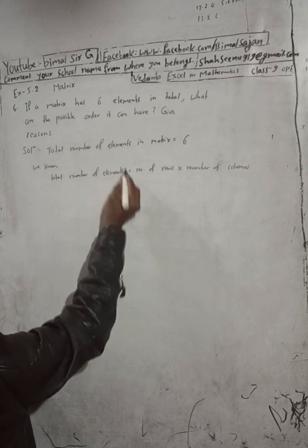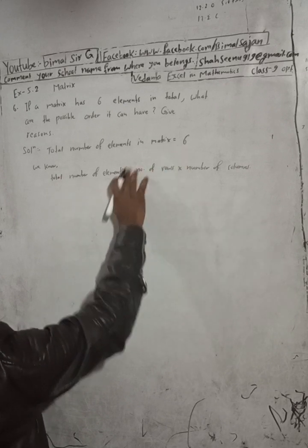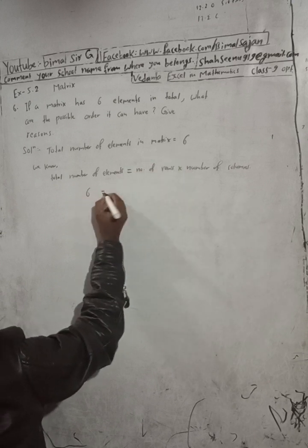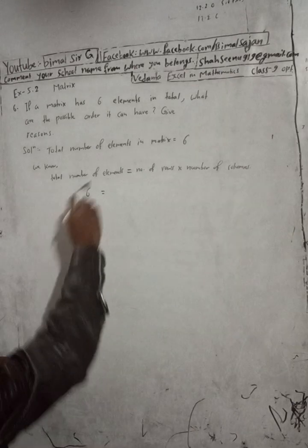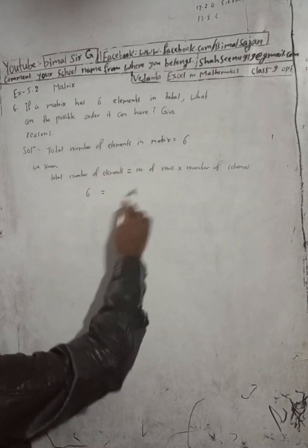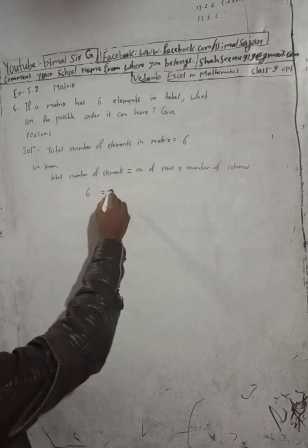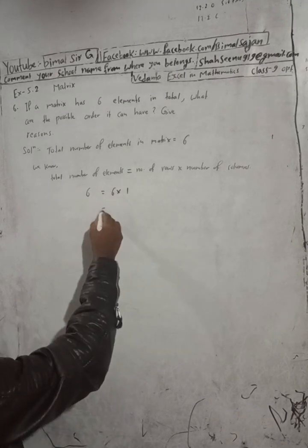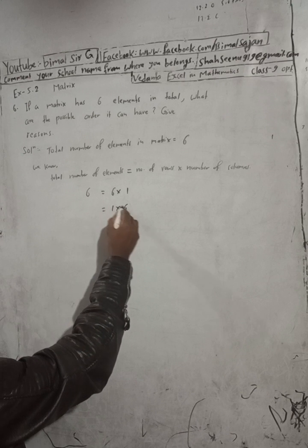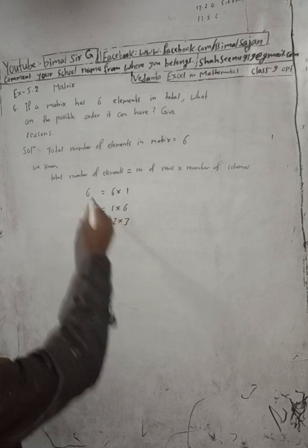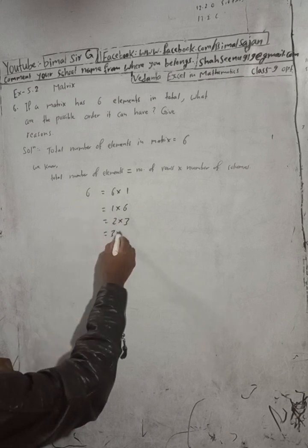Now here the total number of elements is 6. So 6 equals number of rows into number of columns. When we are multiplying, we must get 6. So the alternatives are: 6 into 1 equals 6, 1 into 6 equals 6, 2 into 3 equals 6, and 3 into 2 equals 6.